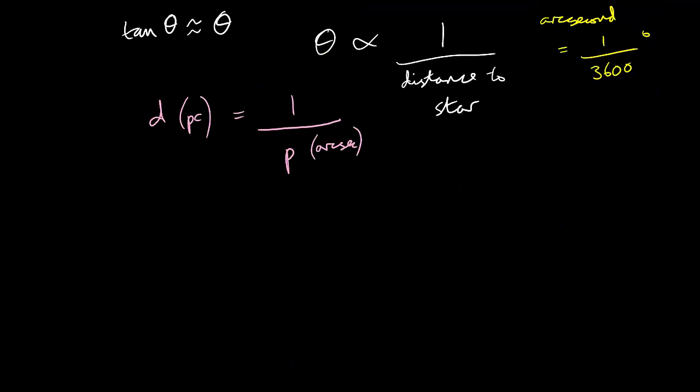divided by P in arc seconds, where d is the distance to the star and P is the angle. Our nearest star other than the Sun is Proxima Centauri. It is 1.3 parsecs away, which means that it has a tiny parallax angle of less than one arc second. This is barely perceptible. With modern techniques, we can measure the